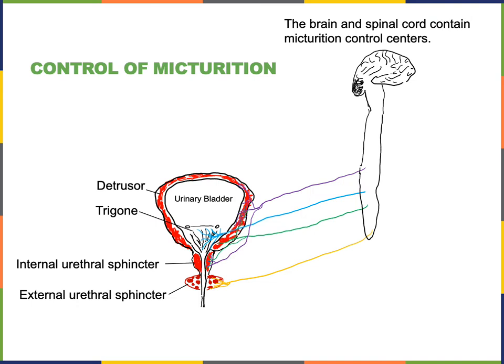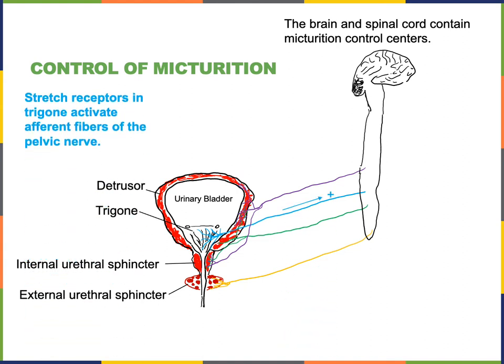Control of micturition involves control centers in the central nervous system, located both in the spinal cord and in the brain. Stretch receptors in the trigone detect filling of the urinary bladder and relay this information into the central nervous system through afferent fibers of the pelvic nerve.